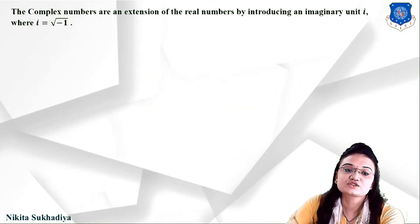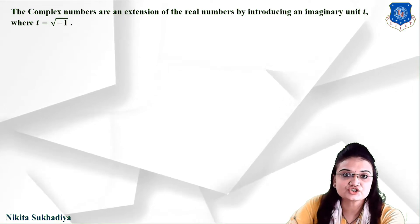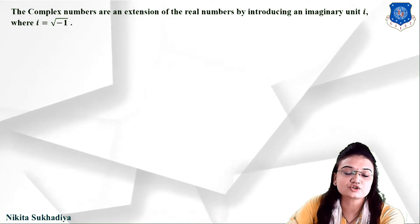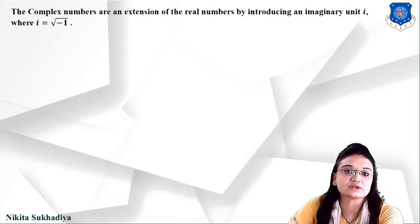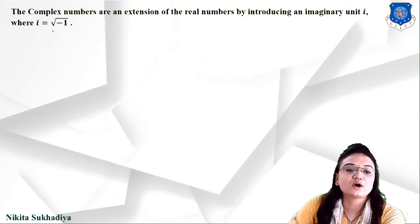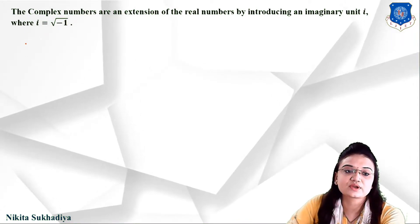Complex numbers are an extension of the real numbers, introduced by adding an imaginary unit i, where i is equal to the square root of minus 1.